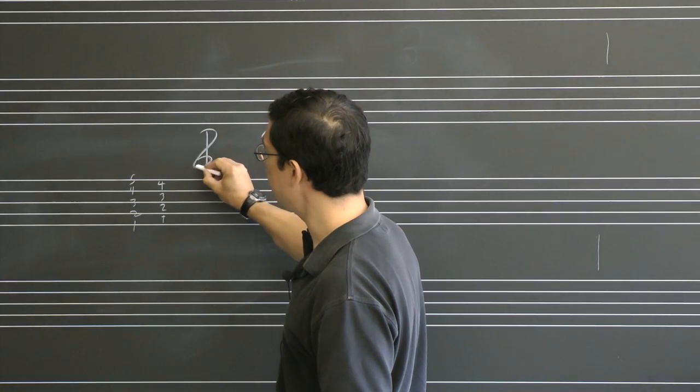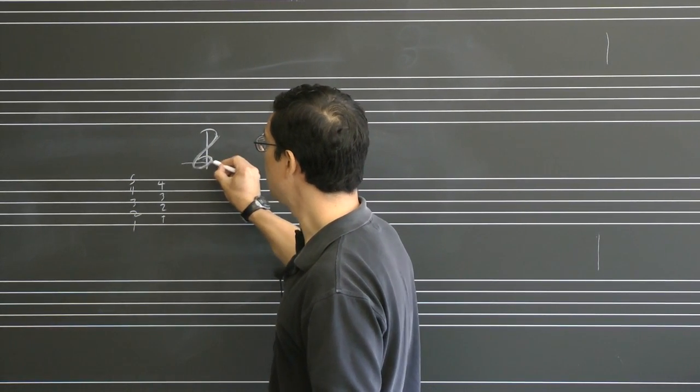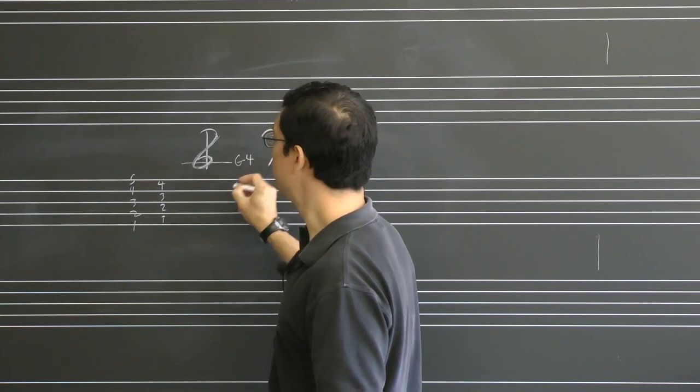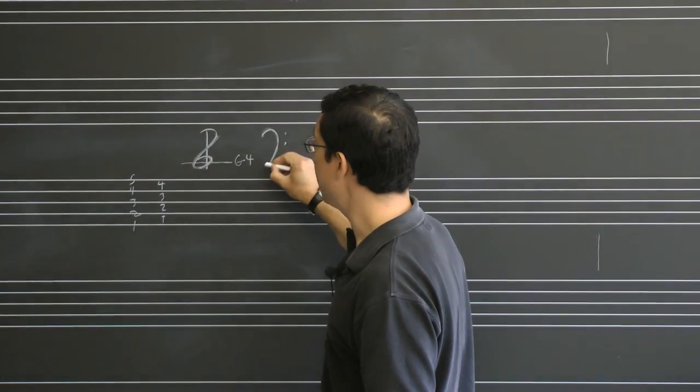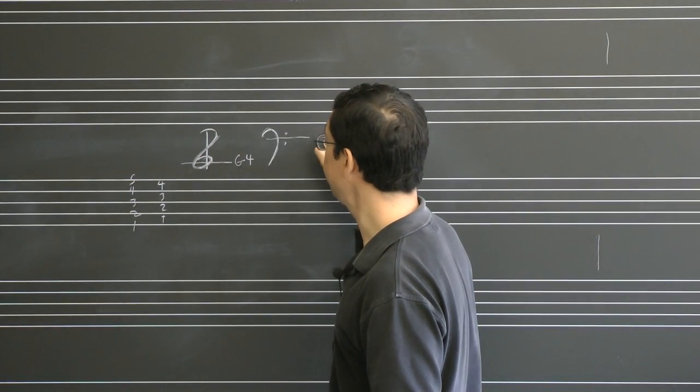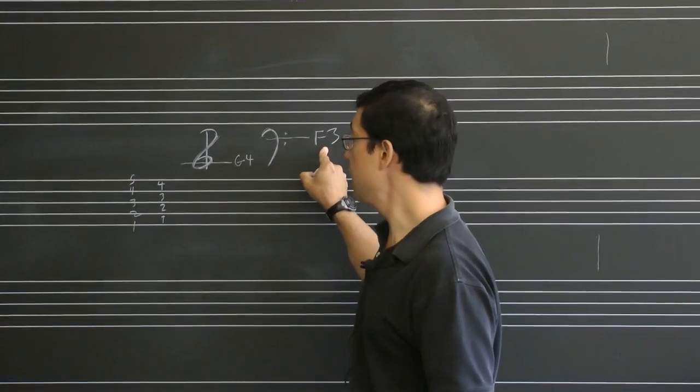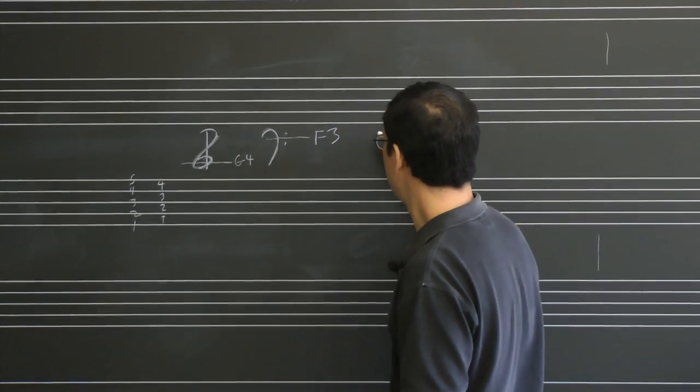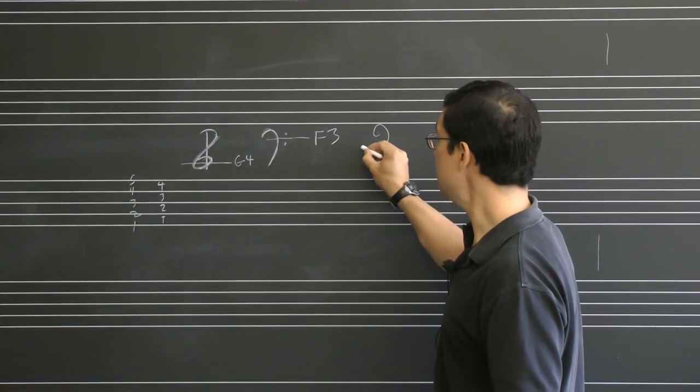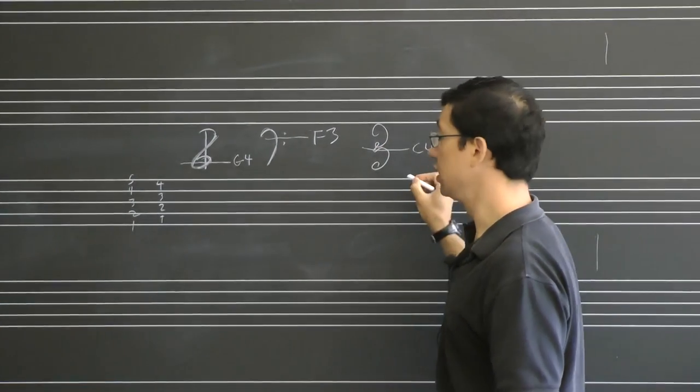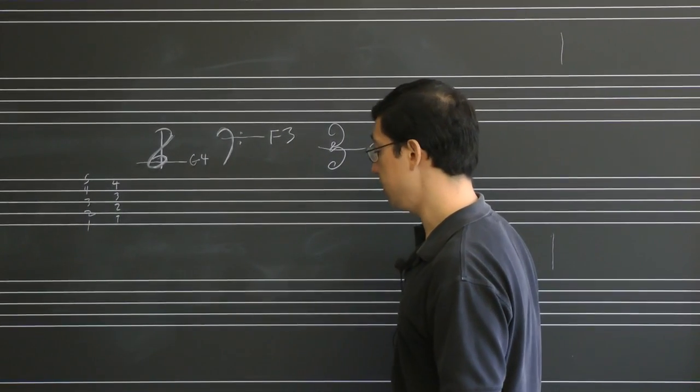Now, this is called a G clef sign because you can imagine a letter G there centered around G4, the G above middle C. Similarly, you can imagine a stylized letter F centered on the F below middle C, F3. Finally, we have a stylized C centered on middle C. And when we place these on the staff, you get clefs.